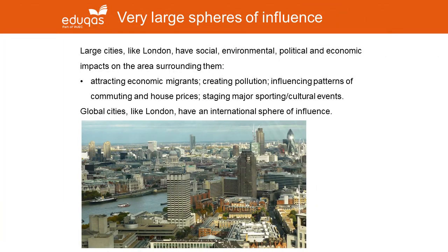We've seen that spheres of influence can be localised or a little bit bigger, but some spheres of influence are very large indeed. Large cities like London have all sorts of different kinds of spheres of influence — social, environmental, political, and economic — with different kinds of impacts on the area around the city, or its hinterland. A large city will attract economic migrants, may create atmospheric or river pollution, influence patterns of commuting, and therefore house prices in the surrounding area. Large cities like London and Cardiff also stage major sporting and cultural events, and these too can have spheres of influence.